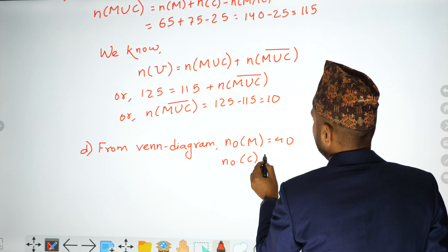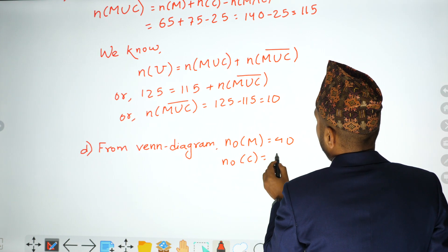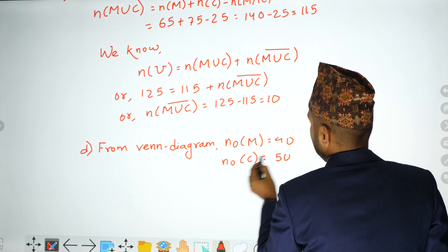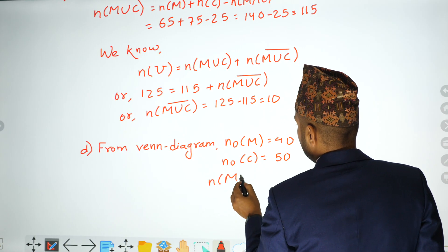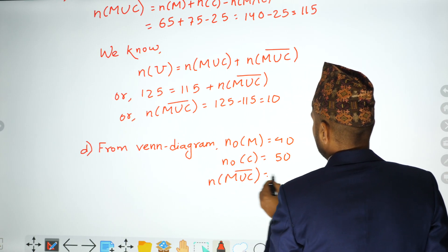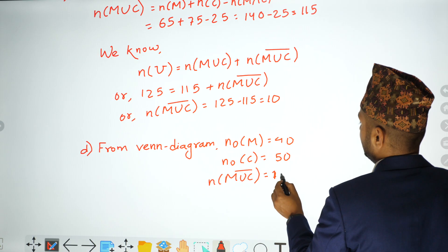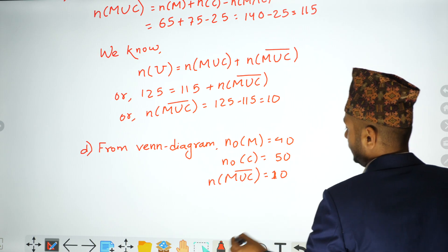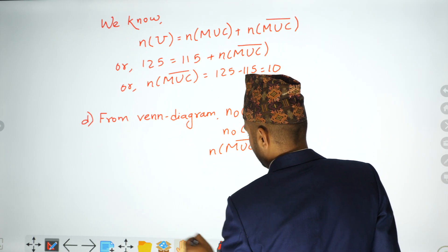Students with only computer (C not M) = 50. Students with no equipment (complement of M union C) = 10. Therefore, the difference is 90 minus 10 = 80.